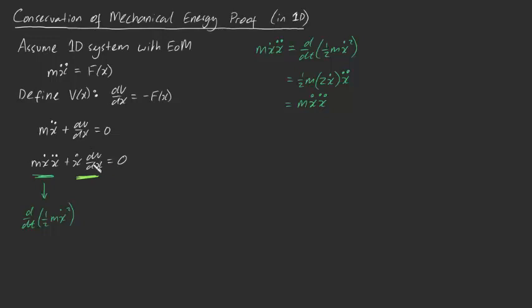Now let's consider this expression just here. This expression, x dot times dv dx, is actually the same thing as dx dt times dv dx. Cancel off the dx's, and we're left with dv dt. Or another way of writing that is d dt of v of x, like this. So if we write this in here, this is going to be d dt of v of x, like this. And of course we've got a plus here, and that's equal to zero.